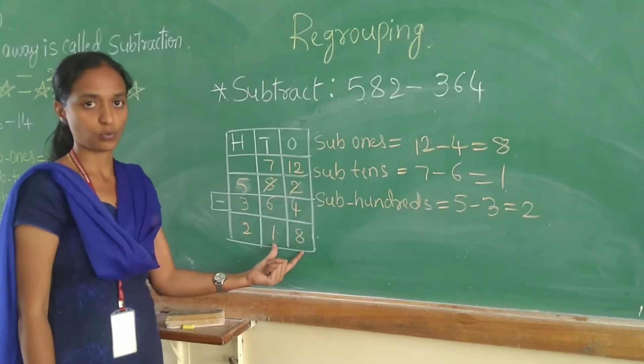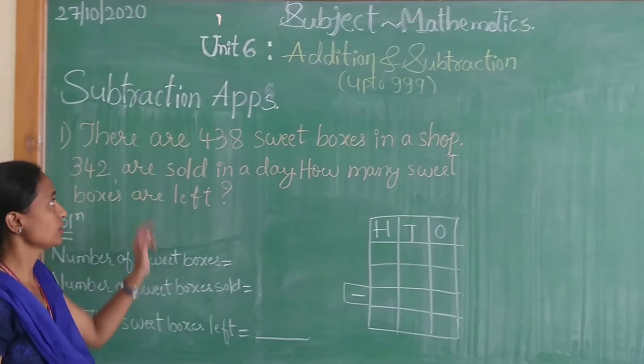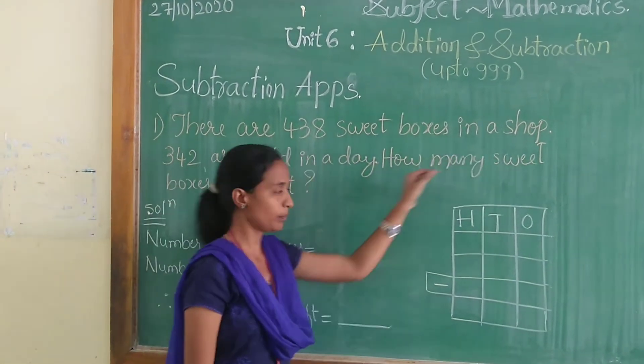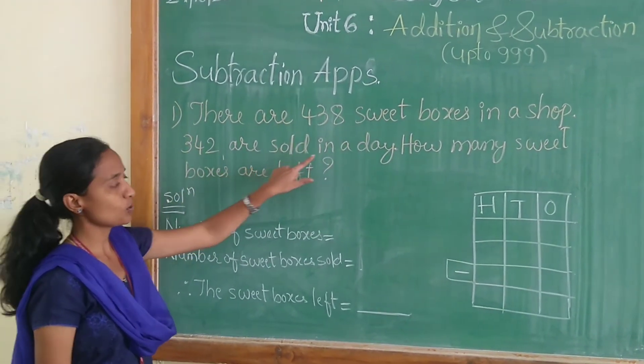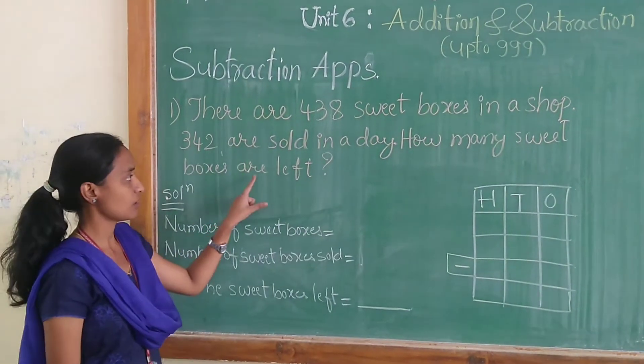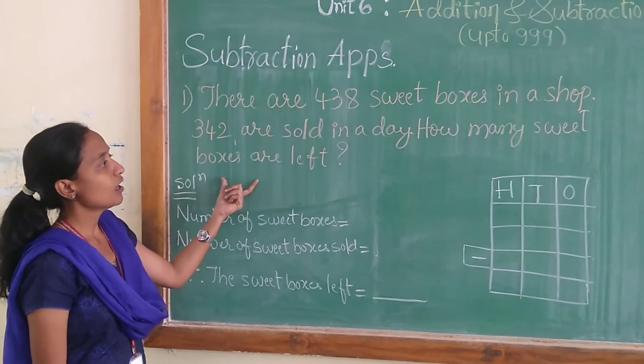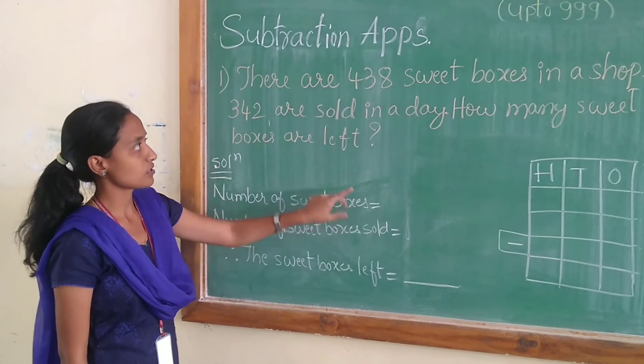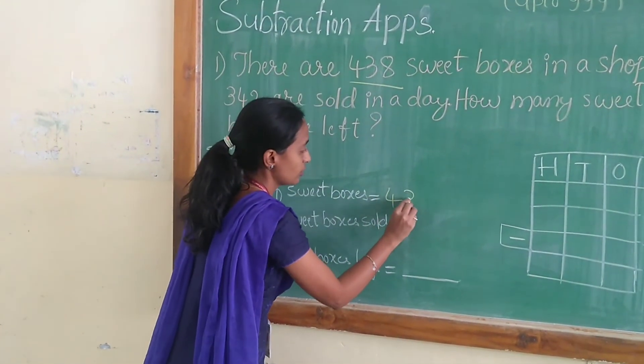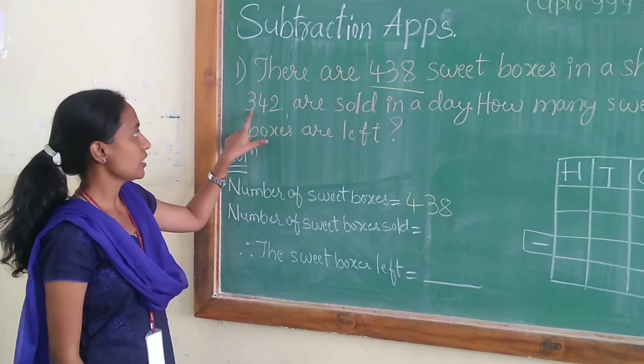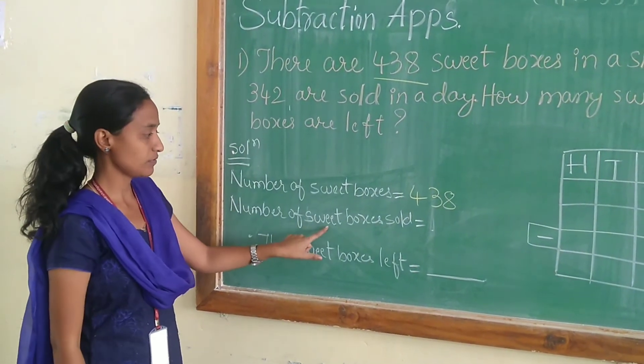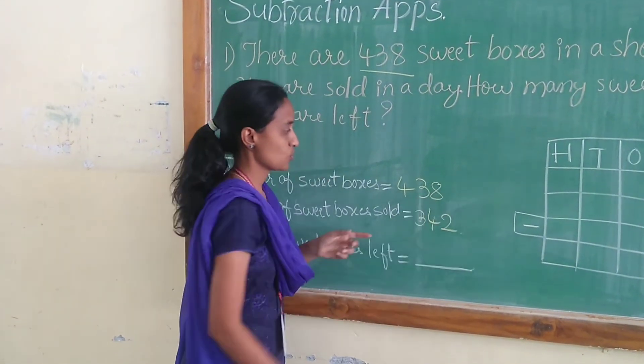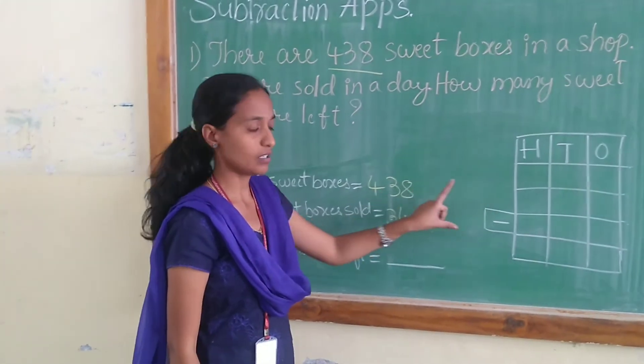I hope I am clear to you. Let us solve a problem. There are 438 sweetboxes in a shop. 342 are sold in a day. How many sweetboxes are left? Here we need to find how many sweetboxes are left. Number of sweetboxes is equal to 438. In that, 342 are sold. So you have to place the given numbers in the respective column.